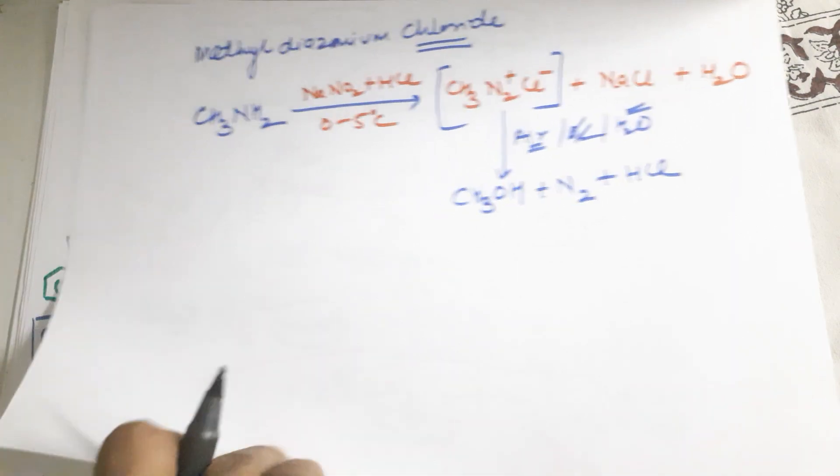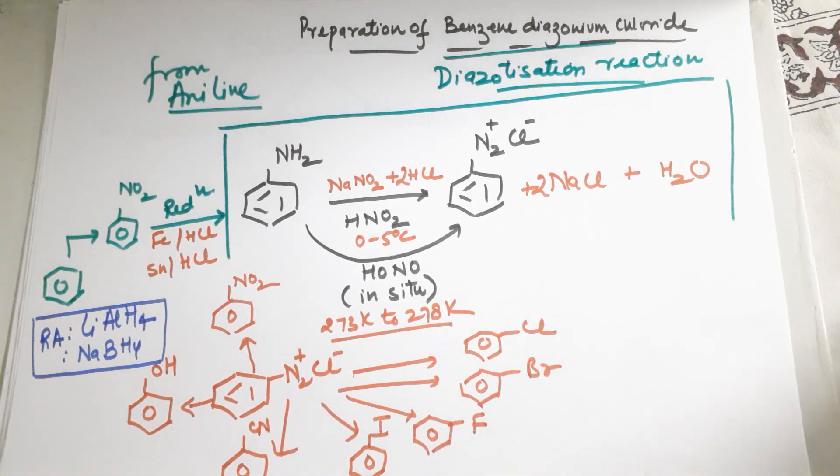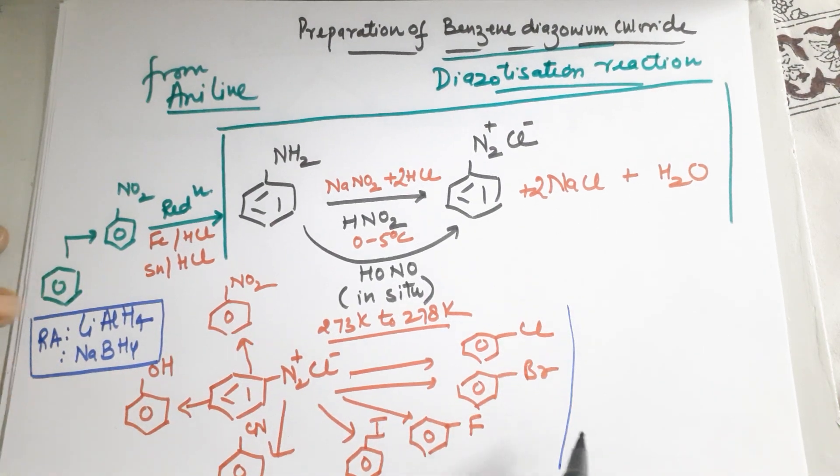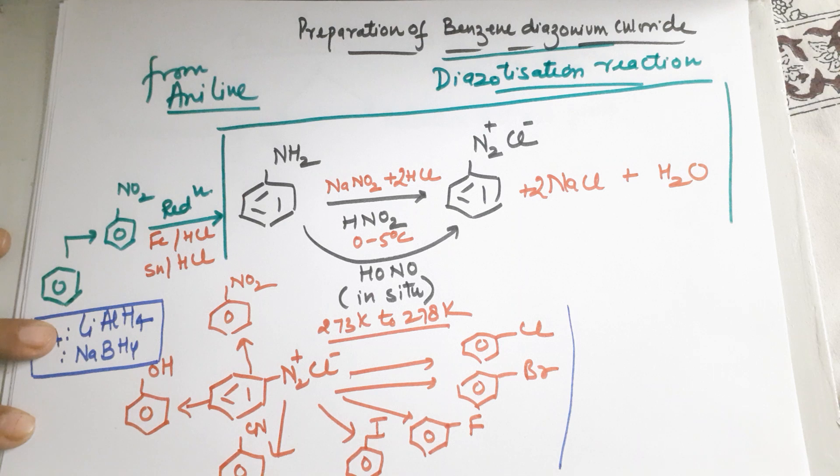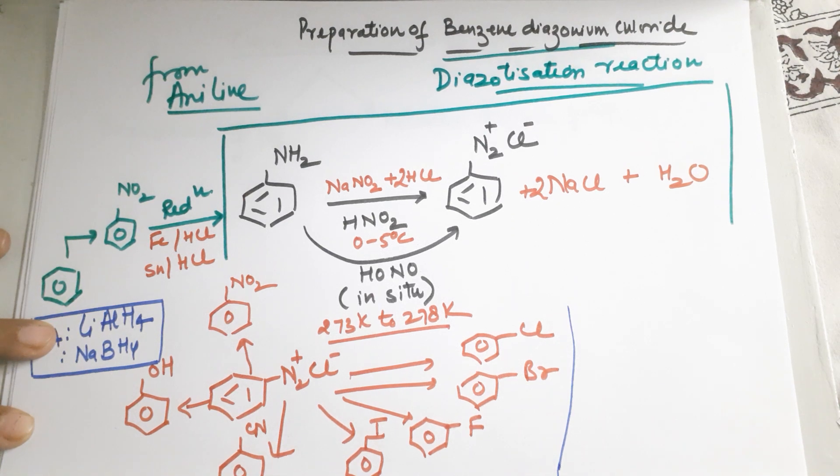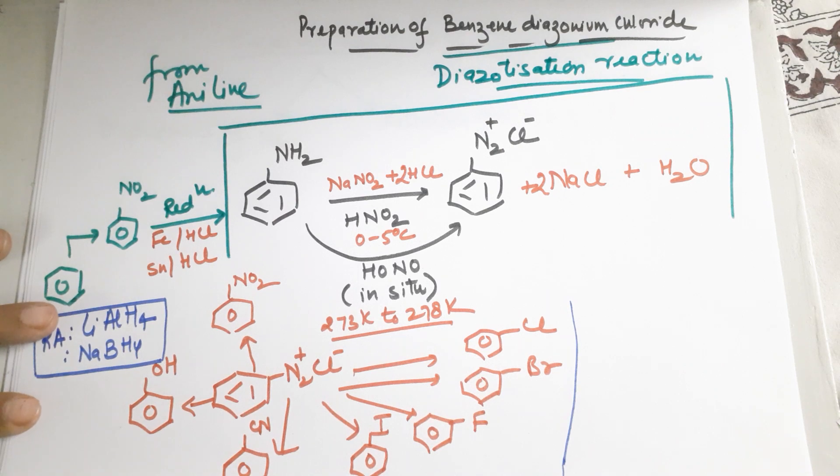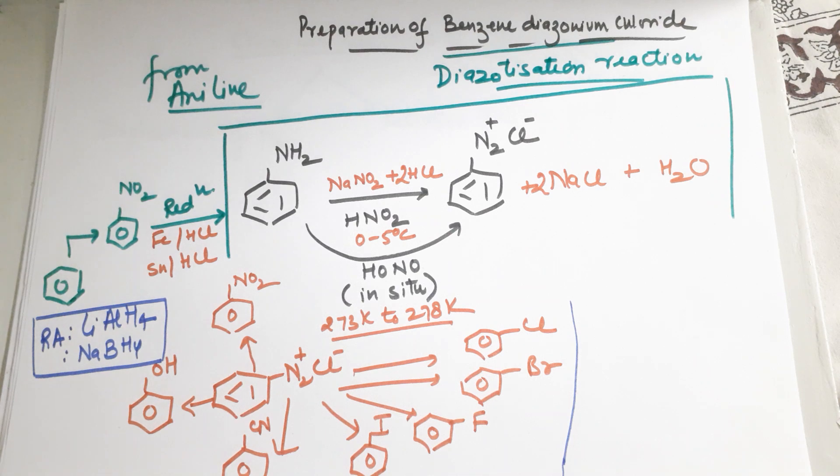You will never be able to prepare any alkyl diazonium salt. You can only prepare benzene diazonium salt, and the importance of benzene diazonium salt is that you can prepare multiple products from it. With this, I close the class on preparation of benzene diazonium chloride or the diazotization reaction. Hope you are keeping safe, stay well, stay happy, bye.